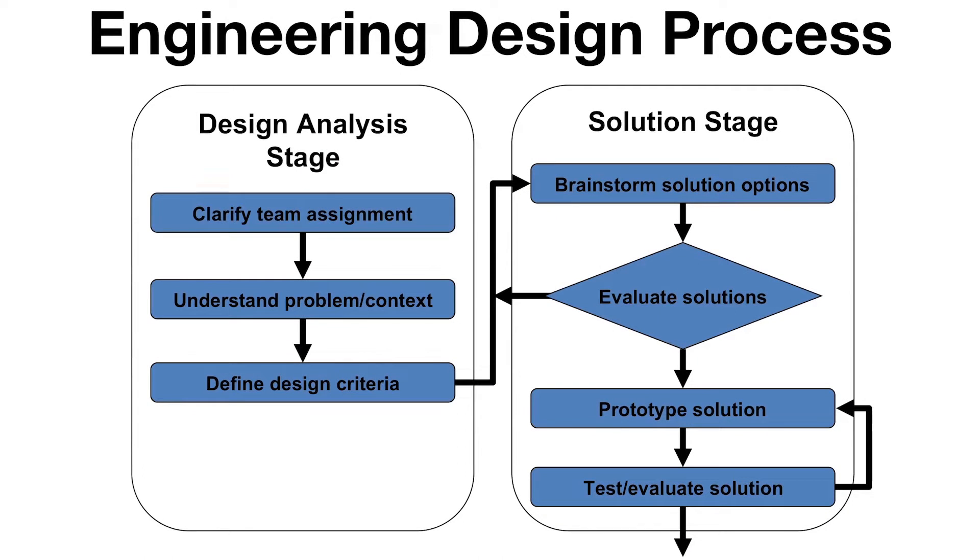At this point in the engineering design process, your team should have clarified its assignment, completed design context review, and established design criteria. The next step in the engineering design process is idea generation. Idea generation can be difficult, but luckily there's a process we have to apply called brainstorming.